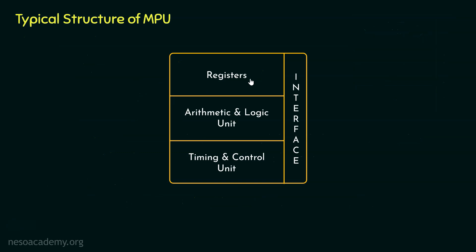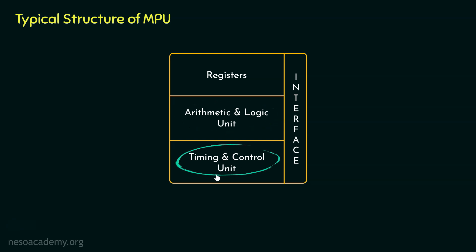Once we are done with the register section, then comes the Arithmetic and Logic Unit. The ALU performs a set of primitive arithmetic and logical operations, regarding which we will be learning in details from the next chapter onwards. After the ALU, we have the Timing and Control Unit. This particular section controls and coordinates the activities of various subsections inside the MPU and also the devices which are externally connected to the microprocessor. We will learn about this unit in more detail in a later chapter.